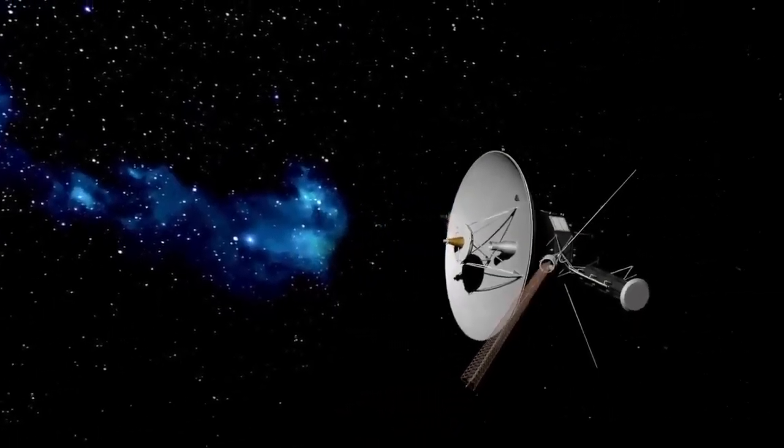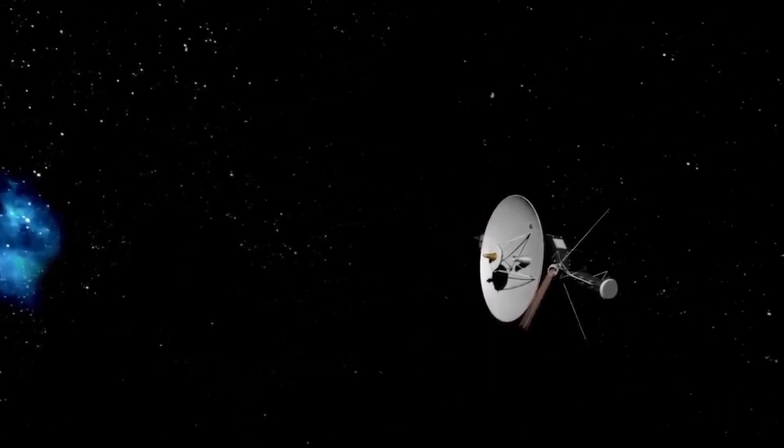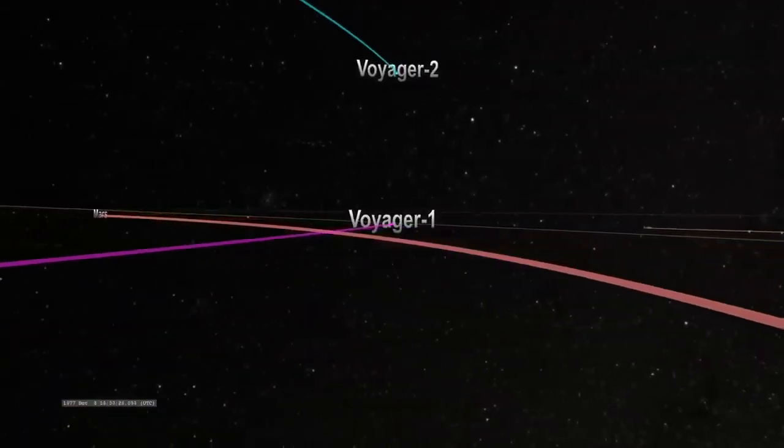While Voyager 1 is still operational, scientists on the mission recently noticed that it appeared confused about its location in space without entering safe mode or sounding an alarm.